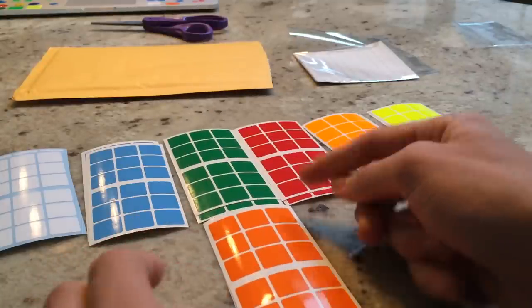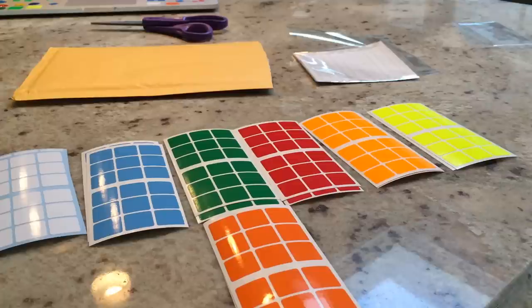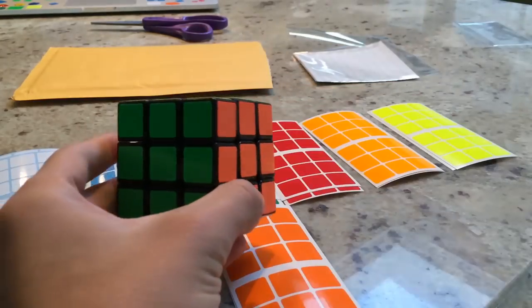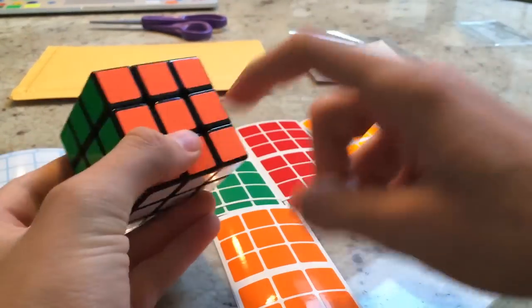I want to see what works better with the green, because since I'm colorblind, I always get the orange and the green mixed up on Moyu puzzles or YJ puzzles. Here is an example, here is the YJ Chilong. I really want it to be my main, but I really just cannot tell the difference between those two colors, the green and the orange.